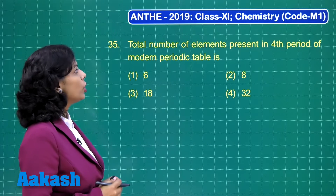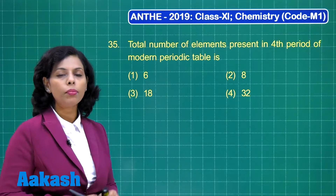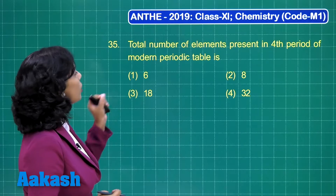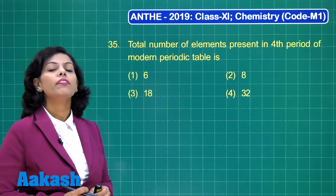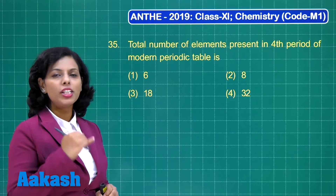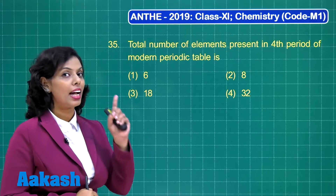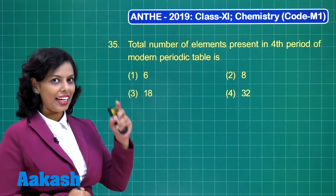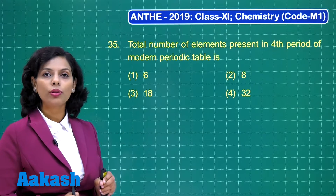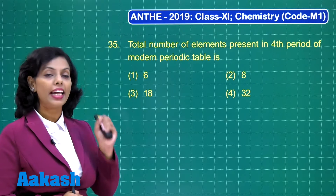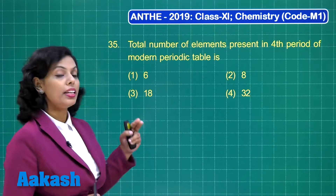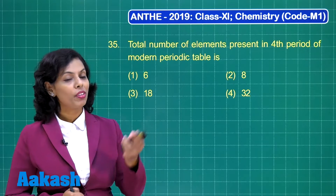Question number 35: total number of elements present in the fourth period of the modern periodic table. In the first period there are two elements, in the second period eight elements, and the third period also consists of eight elements. The fourth period has 18 elements.